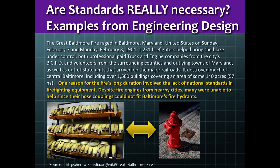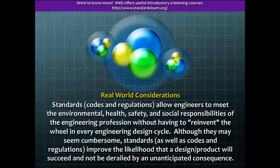Up to this point, we have looked at just a few examples of standards, codes, and regulations that can influence engineering design. But do they really matter? Indeed, they do. One of the most famous examples of a standards-induced disaster is the Great Baltimore Fire of 1904. Firefighting technologies in different cities were simply not the same, and when over 1,200 firefighters were brought in to help stamp out the fire, the connectors didn't fit. The fire raged on far longer, causing far greater damage than would have been possible had connection standards been established and met.